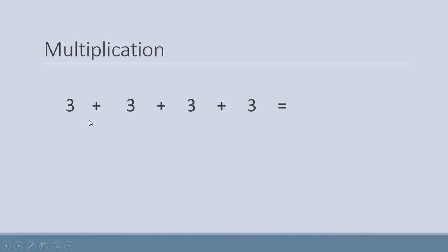He has four bunches and in each bunch we have three bananas, so we add three four times. Hamare paas ek bunch mein three bananas the aur total four bunch the, toh humne three ko four time add kiya. Three plus three — we get six. Six plus three — count it with your fingers — seven, eight, nine.